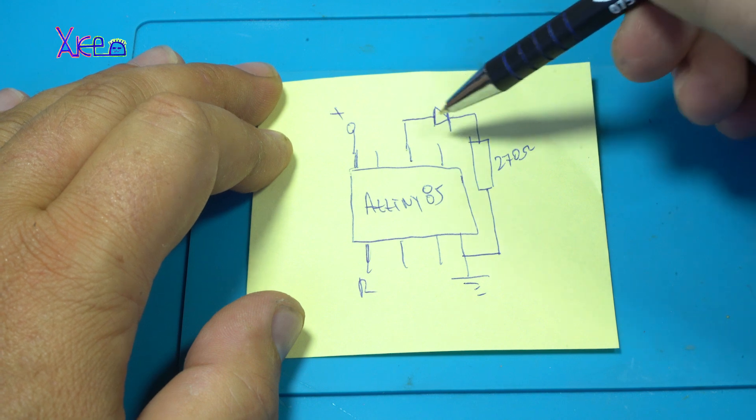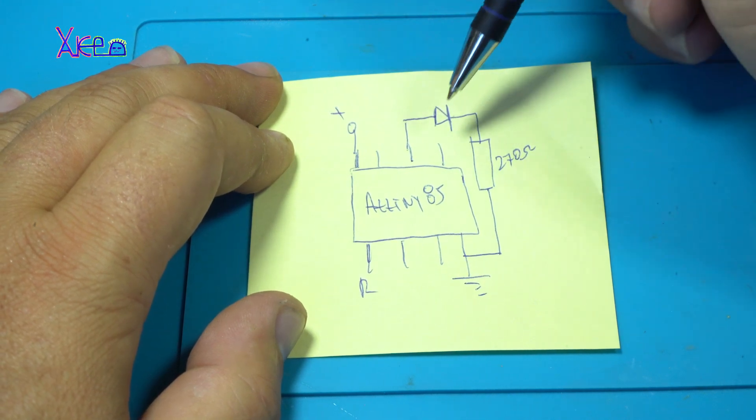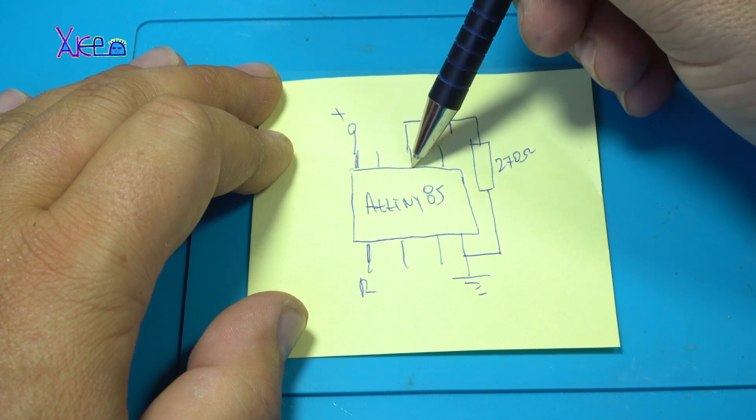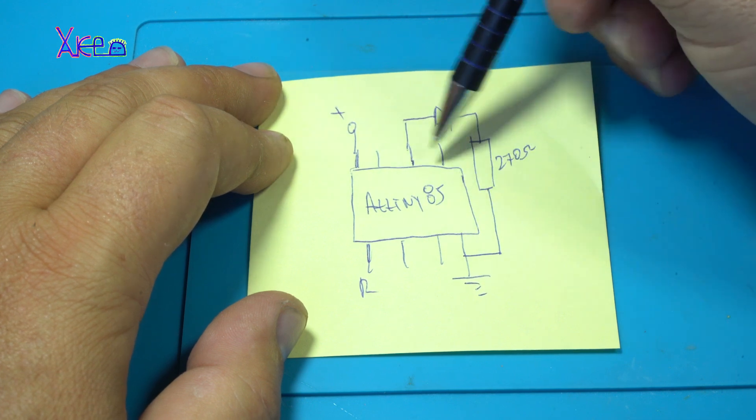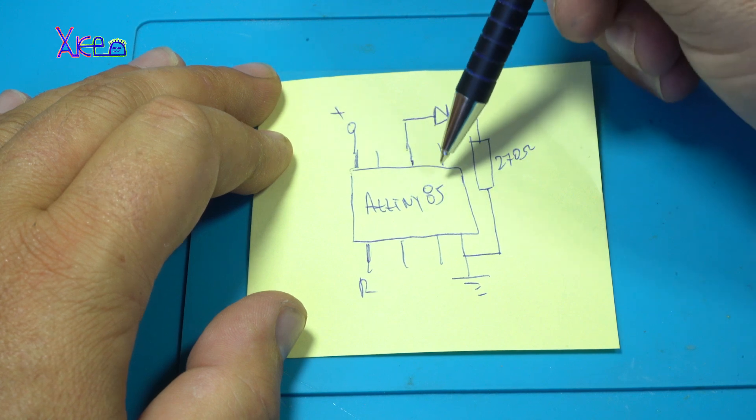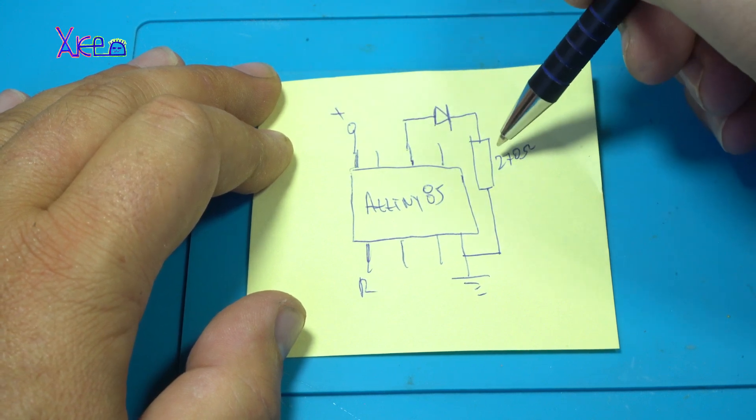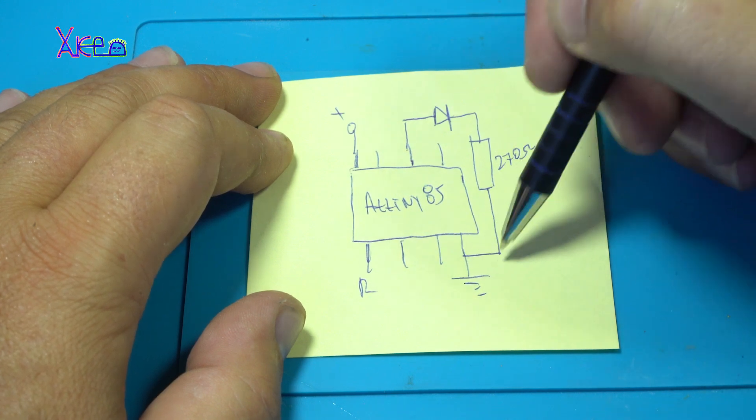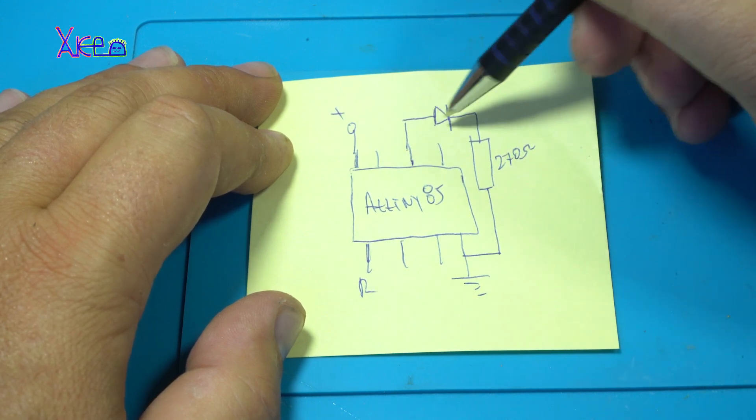But in this project I am using just one pin for driving the LED and one pin for the photosensor. The LED is connected on digital pin number 1, that is the 6th leg of the ATtiny, through one resistor of 270 ohms connected with ground. And this LED will blink.